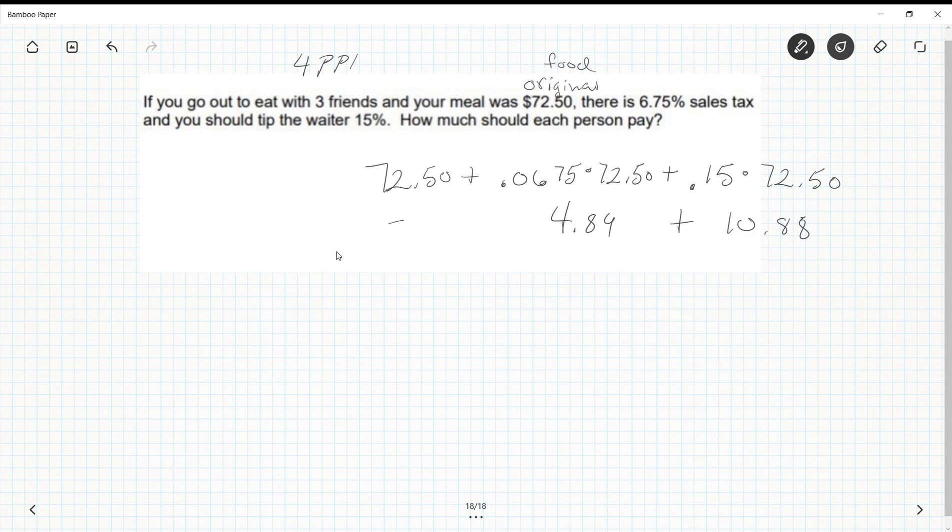Nothing changes, and add all this up and I get the total bill to be $88.27. This is for all four of you. So if I want to figure out what one person pays, I need to divide this by 4 to get one person. All right, so if I plug that into a calculator, I can get that everyone pays $22.07.